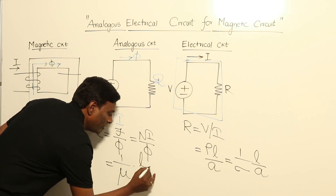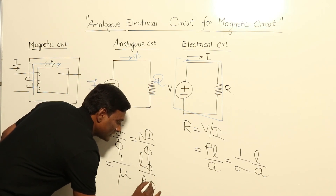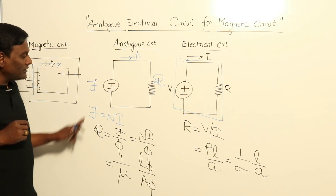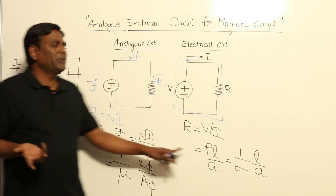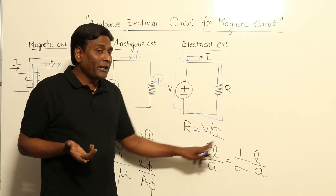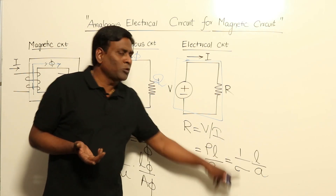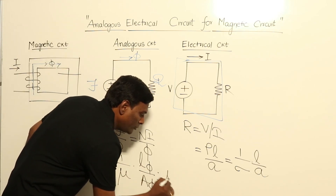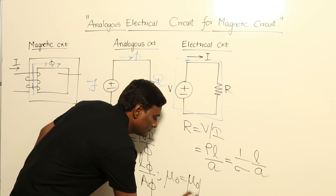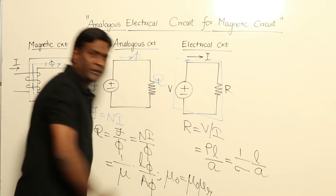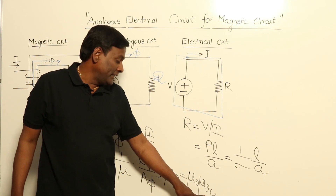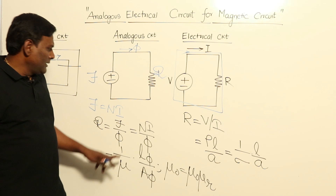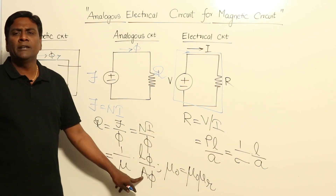Reluctance = L divided by (μ · A), which is the length of flux path divided by area of cross section of flux path. You need not remember this formula separately. Since you cannot forget ρL/A — or equivalently (1/σ)·L/A — just replace σ with the allowing property μ, where μ = μ₀μᵣ. Here μᵣ is the relative permeability of the material and μ₀ is the permeability of free space.